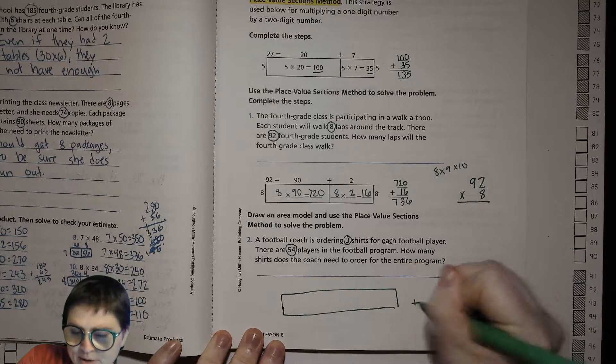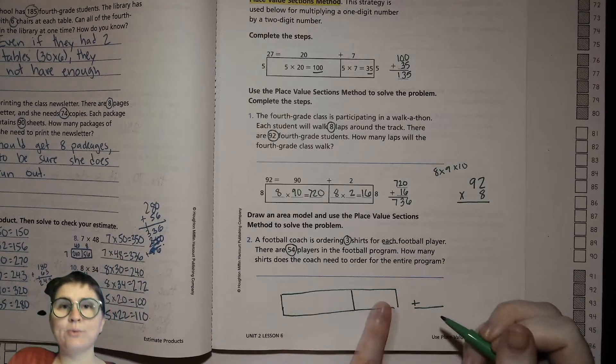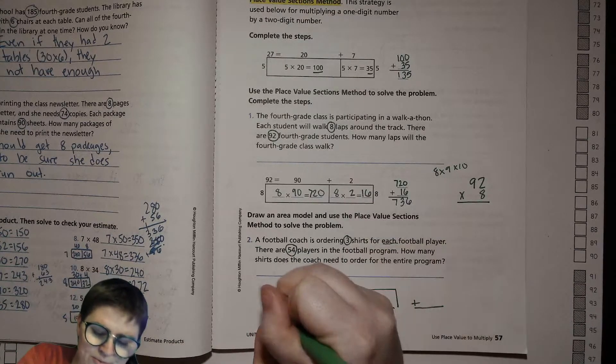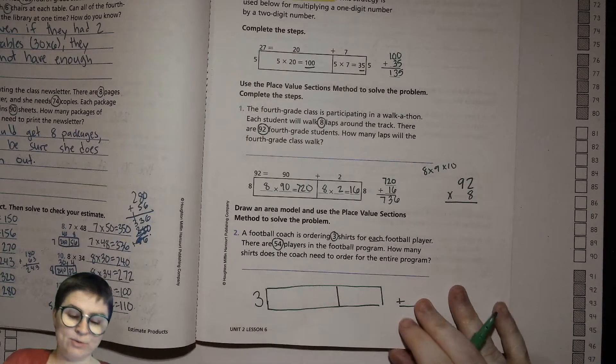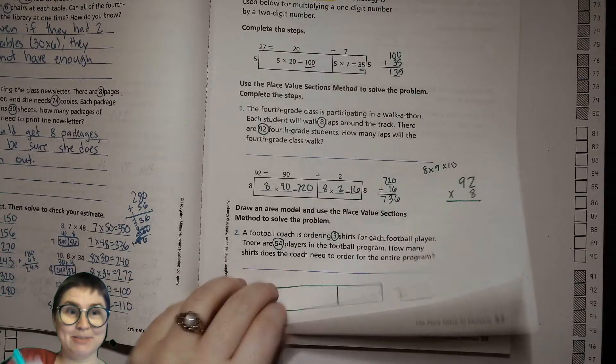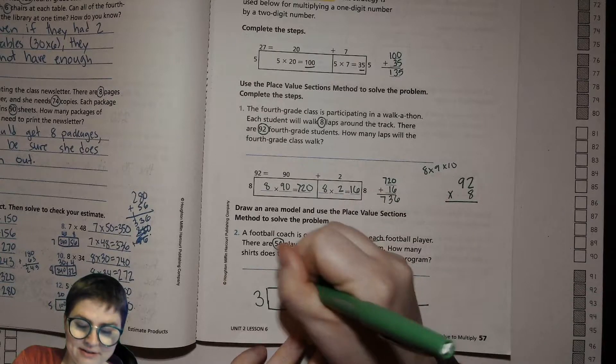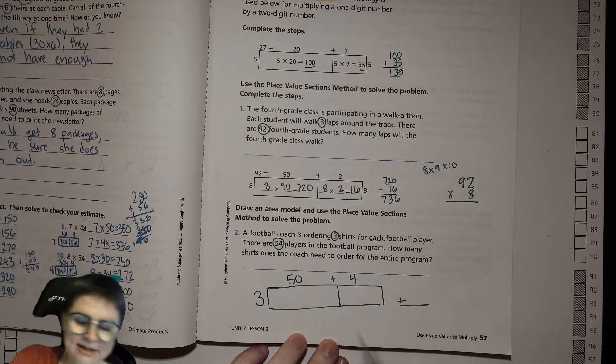Then we'll set up our addition problem right here. We'll have our tens place and our ones place with the single digit factor, which is 3. Then we'll break 54 into the tens and the ones, like expanded form. So 50 plus 4 is 54.